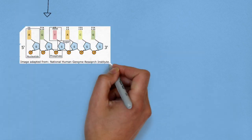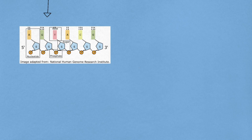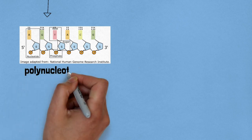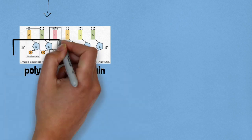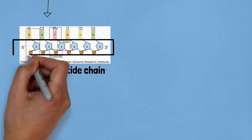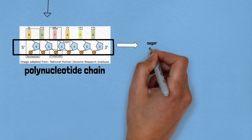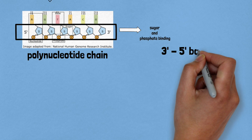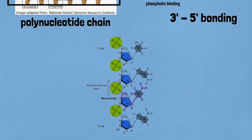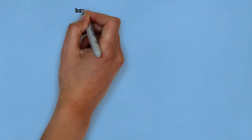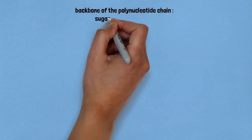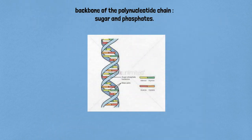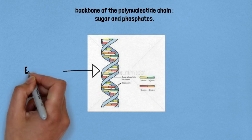Nucleotides join by 3' to 5' phosphodiester linkage to form a dinucleotide, which is just two nucleotides bound together, and further join to form a polynucleotide chain. One end of the chain has a free phosphate and the other has the 5' end of the sugar. The backbone of the polynucleotide is formed by sugar and phosphates.